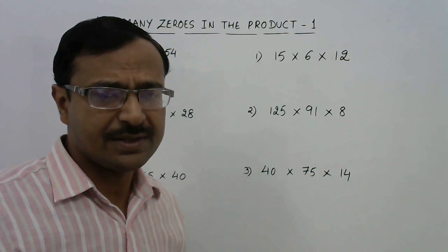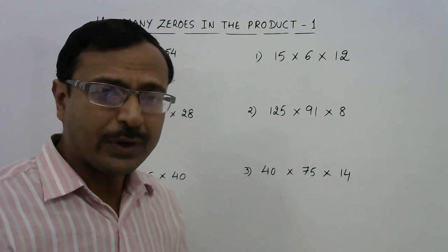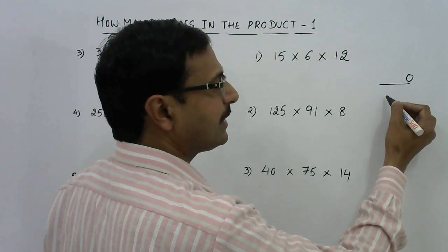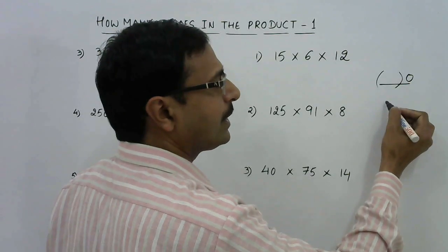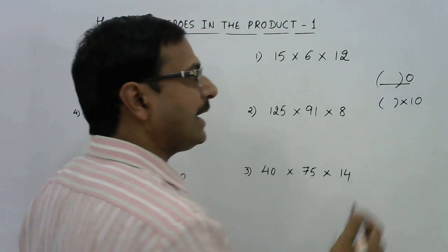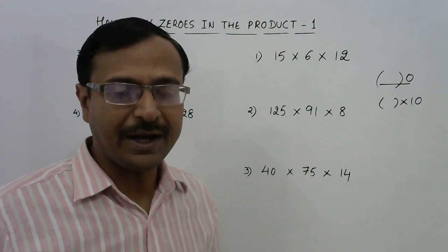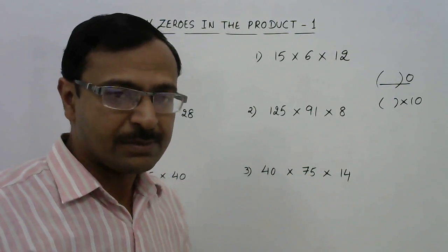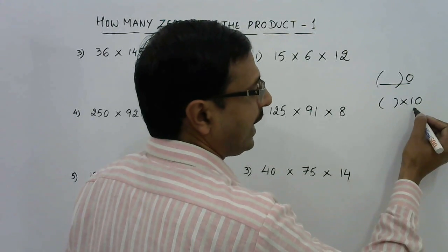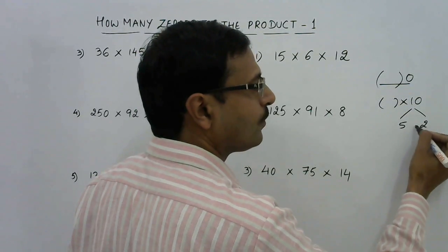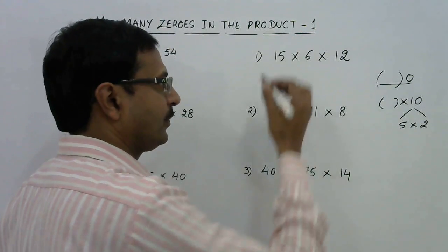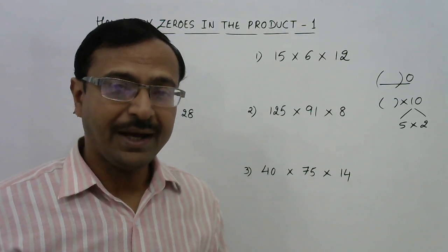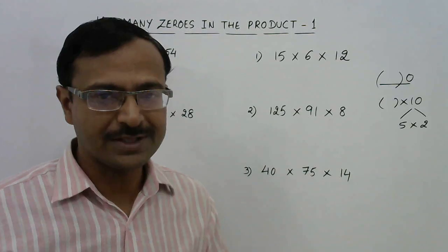One thing to understand here is how you get a zero. Suppose a number ends with zero — that means that particular number is divisible by 10. So anything divisible by 10 will obviously end with zero. I am talking of whole numbers, not decimals. And 10 has factors 5 and 2, so every product that ends with a zero must have fives and twos in its factors.